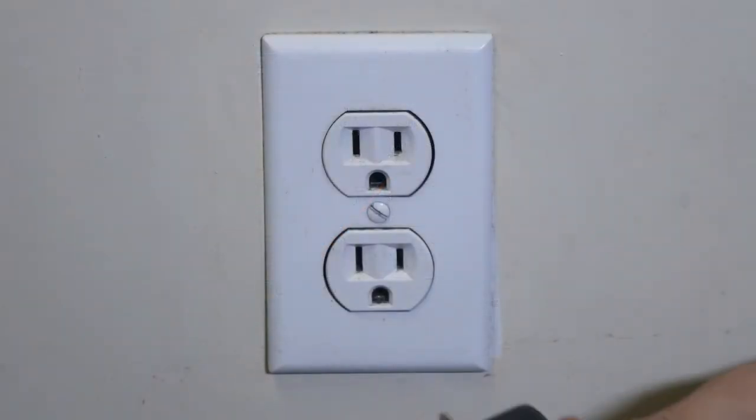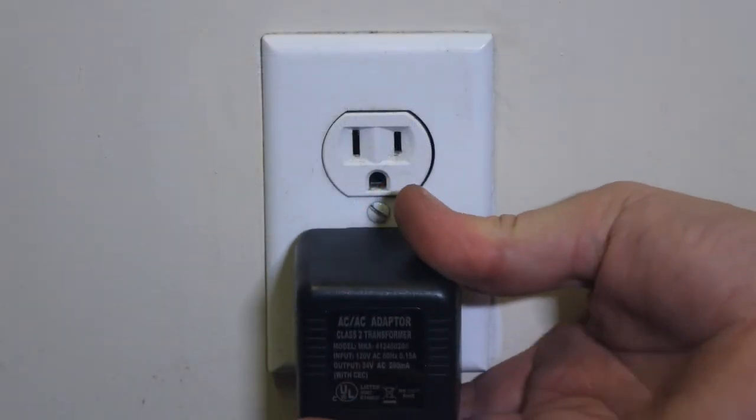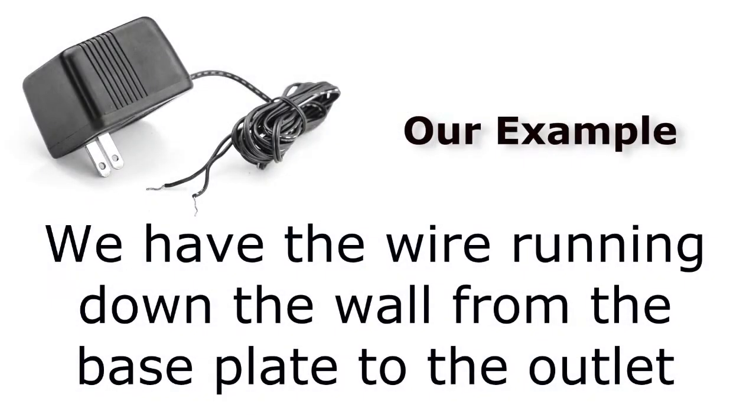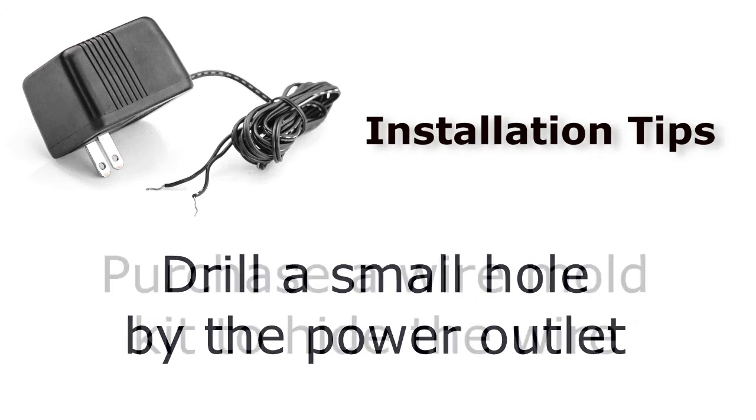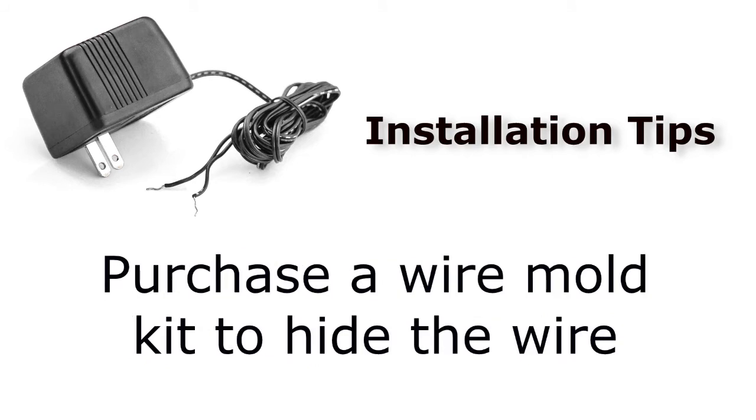Next, plug your power supply into the wall. In this example, we have the transformer wire running down the wall, plugging straight into the power outlet. If you would like to get rid of the unsightly wire, you can either drill a small hole by the power outlet, run the wire up into the wall and connect it to the base plate, or purchase a wire mold kit to help hide the wire.